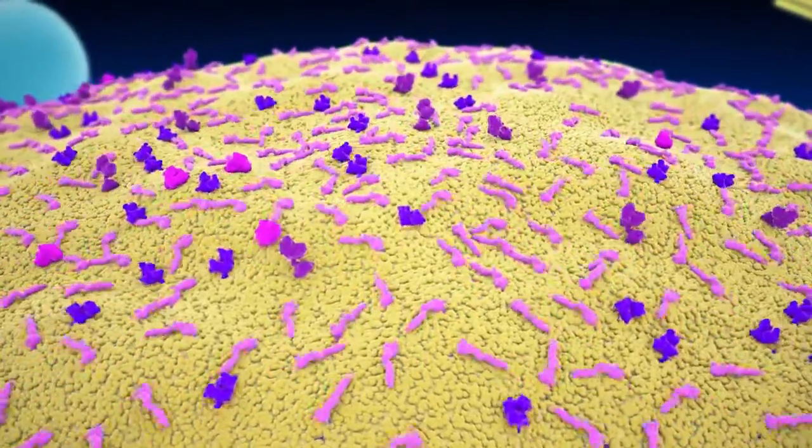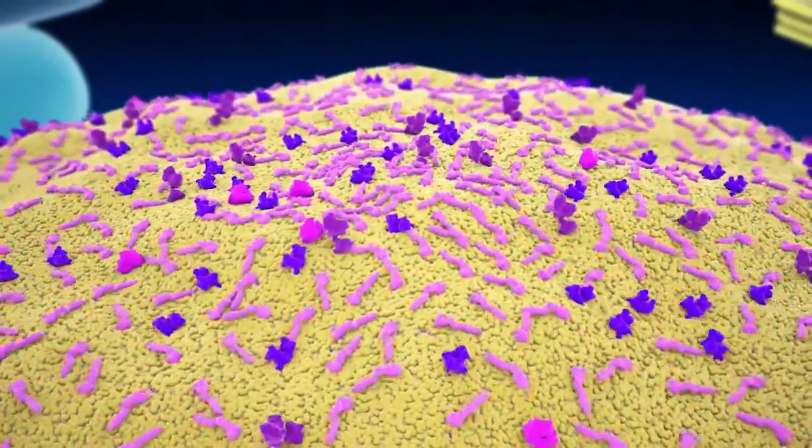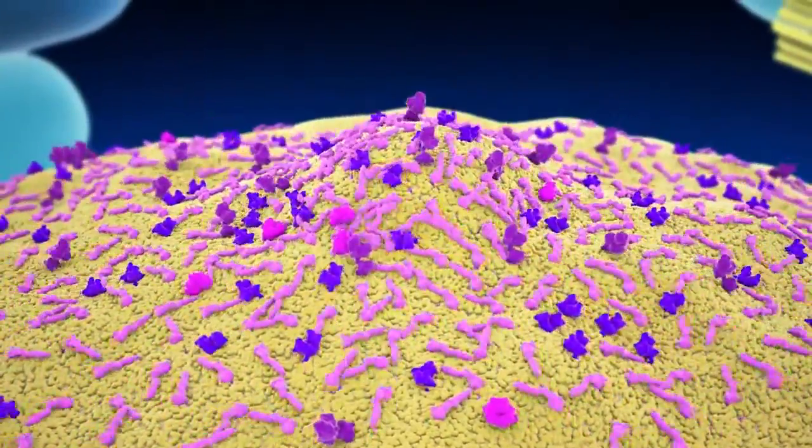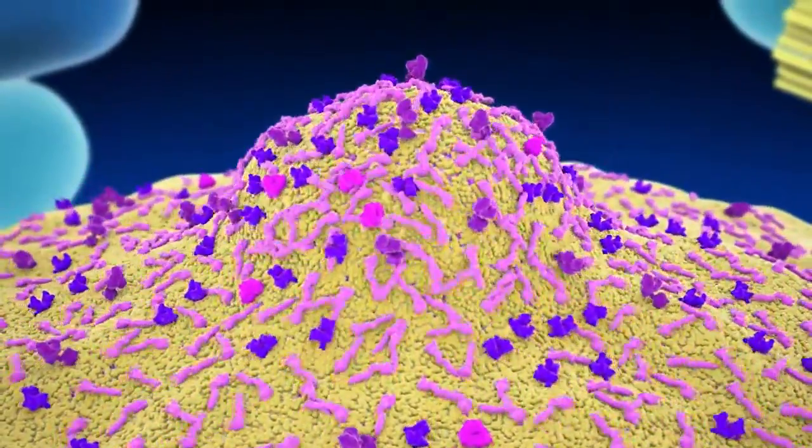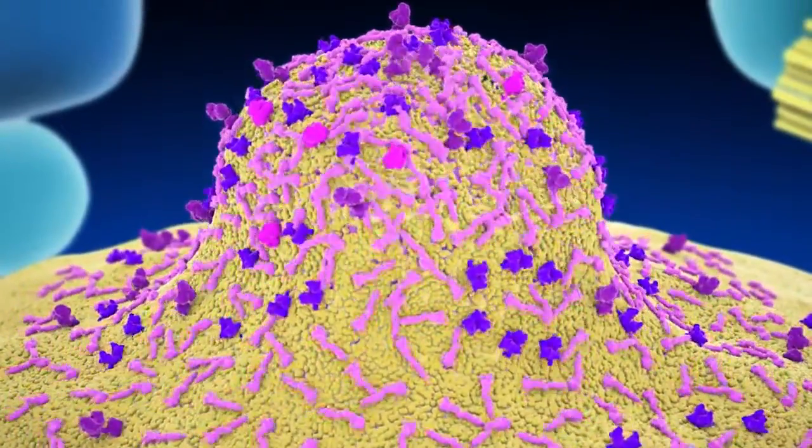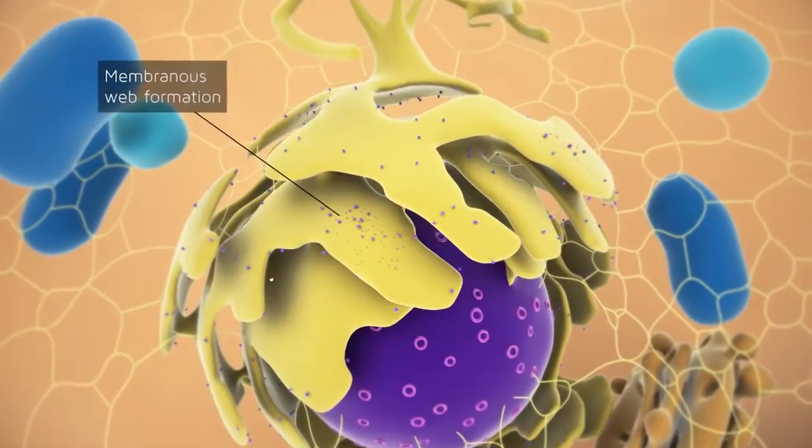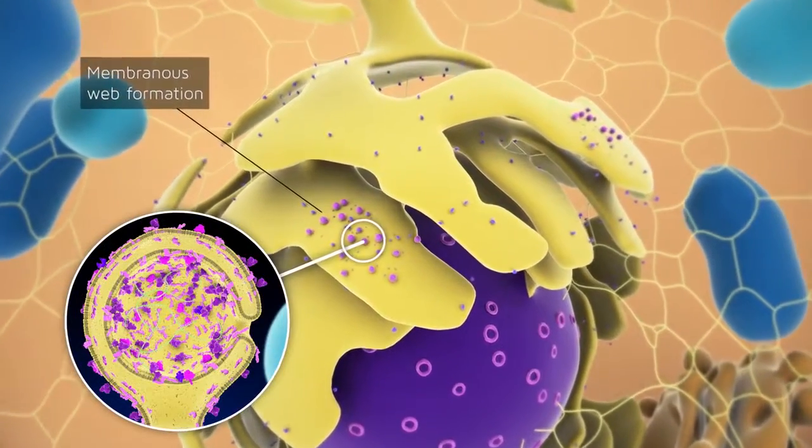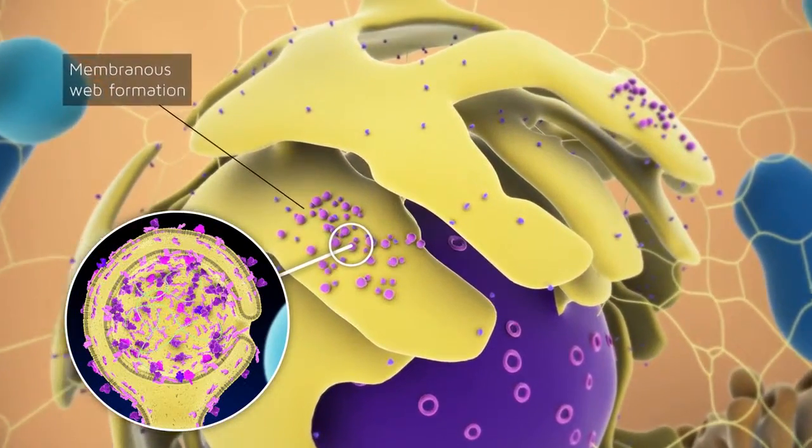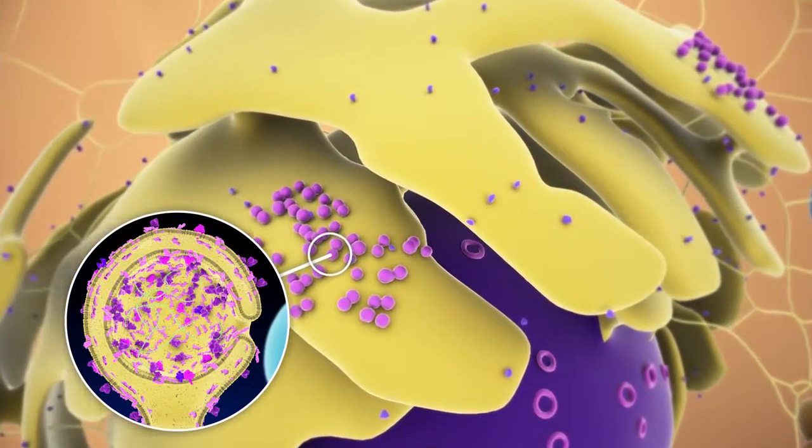HCV replicase proteins, in concert with host factors, induce rearrangements of the ER membrane, including the formation of double membrane vesicles. These vesicles cluster to form the membranous web, which represents the site of HCV RNA replication.